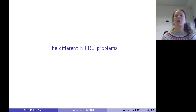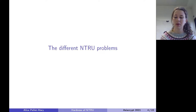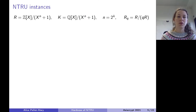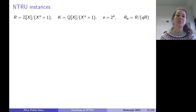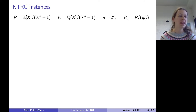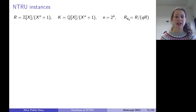Let me go into more details. I'll start by defining NTRU and the three variants: the decisional variant and the two search variants. I'm going to use number fields and rings of integers. I'll fix a cyclotomic number field of power of two, though you can take any nice number field. If you're not familiar with number fields, you can imagine that K is the field of rational numbers, R is the ring of integers, and R_Q is Z mod QZ.